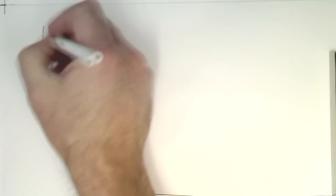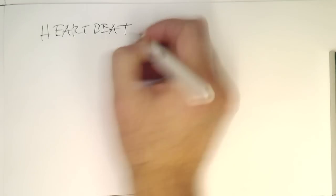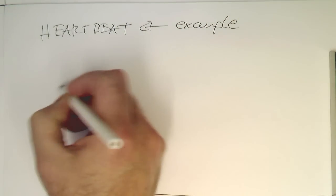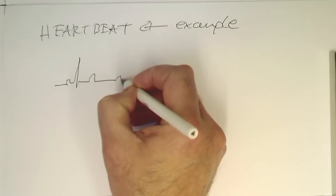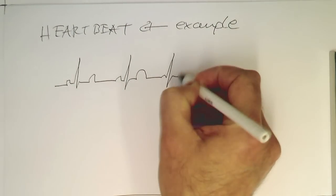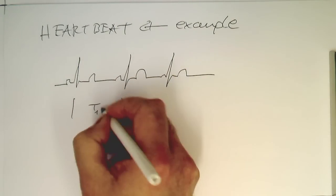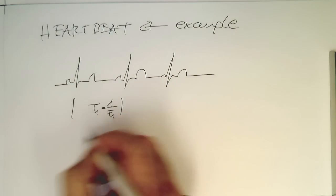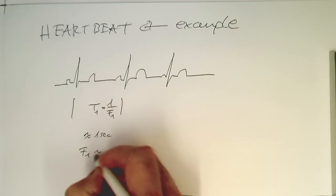Let's look at the heartbeat as an example. Obviously, the heartbeat is clearly periodic. If we have a heartbeat which looks roughly like that, the time—let's call this T1—gives us our fundamental frequency f1. We know the time between heartbeats is roughly one second. This gives us f1 roughly one hertz.